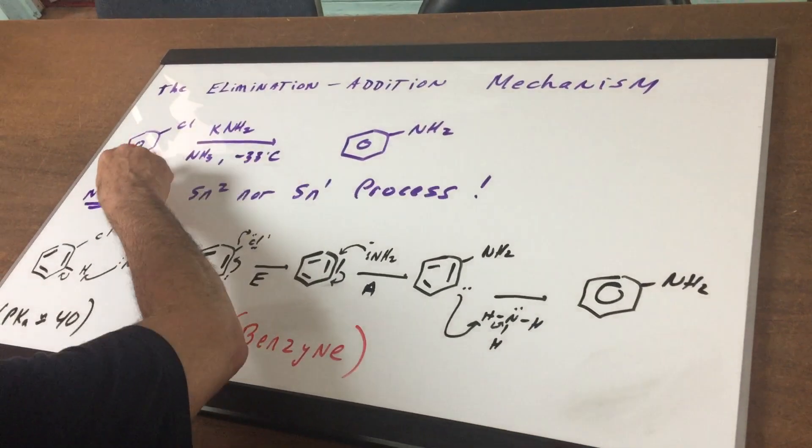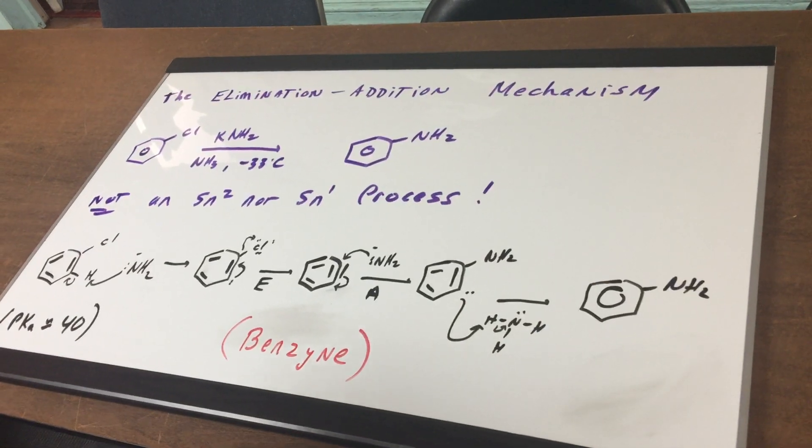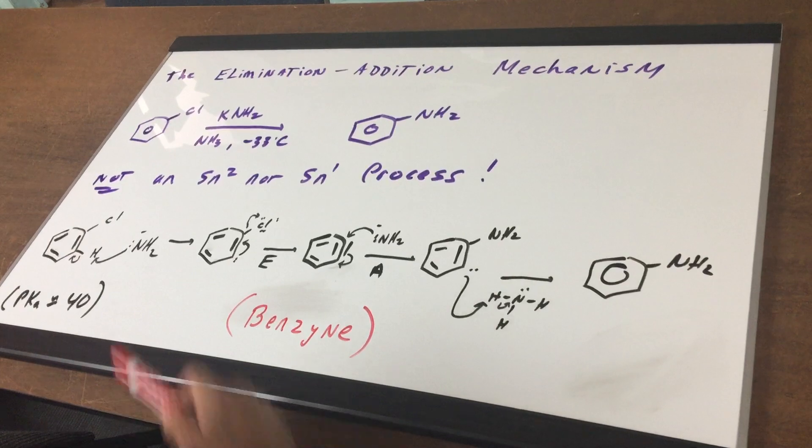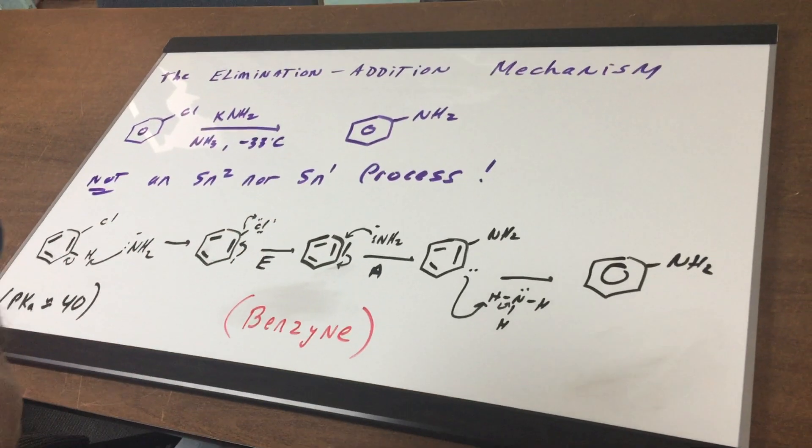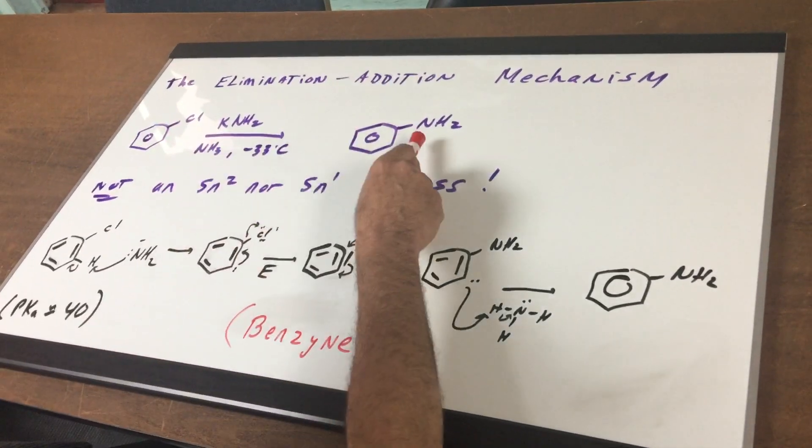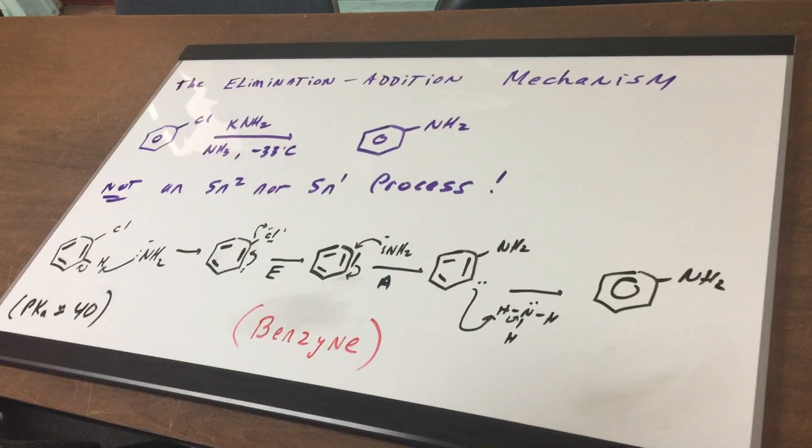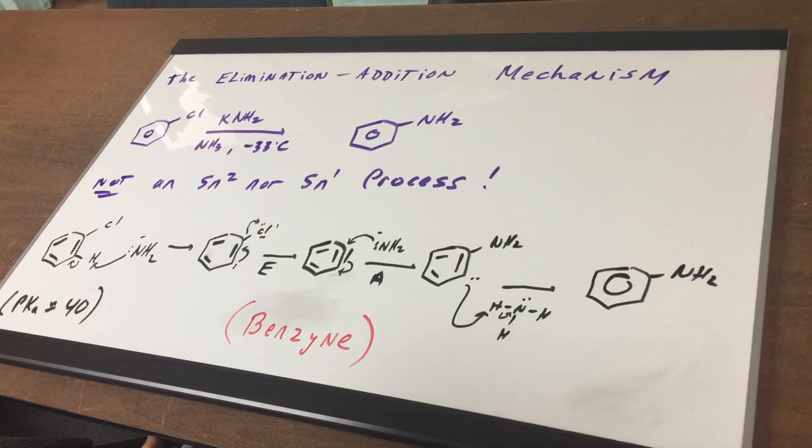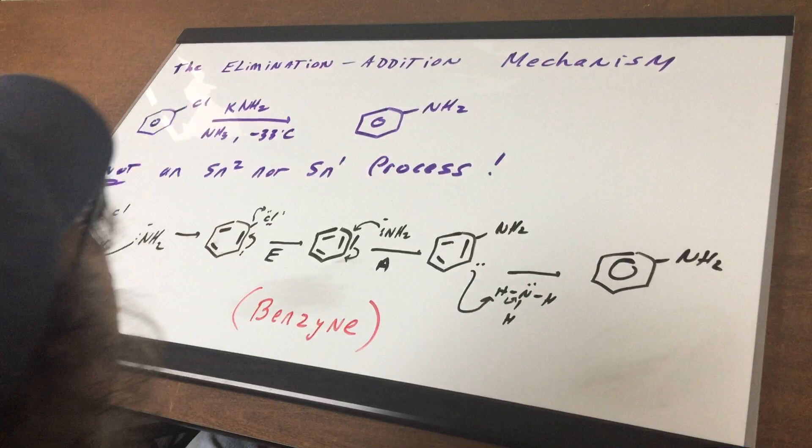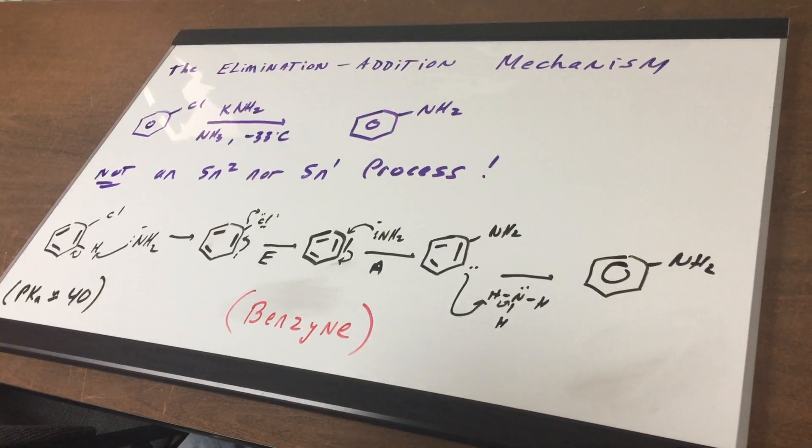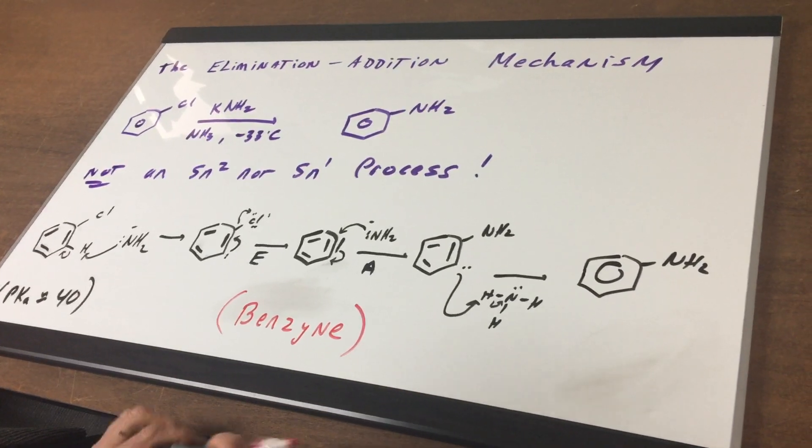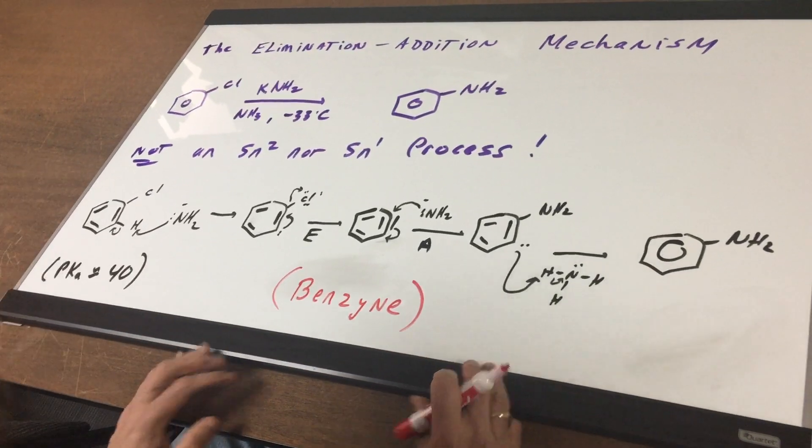Now, in this example, I take chlorobenzene and treat it with KNH2. That's potassium amide in ammonia at negative 33 degrees Celsius. And it looks like we did an SN2. We kicked off the chlorine and put on the NH2 group. But it's not an SN2, which you can't do a backside attack. It's not an SN1 because you don't form a carbocation on a benzene ring. It's too unstable. So what we're going to do is look at this thing called an Elimination-Addition Mechanism.